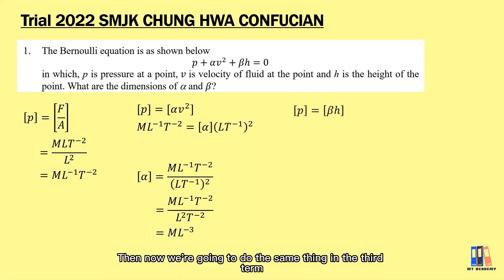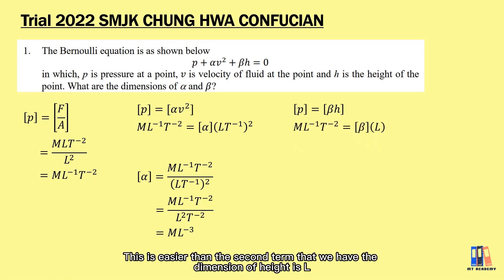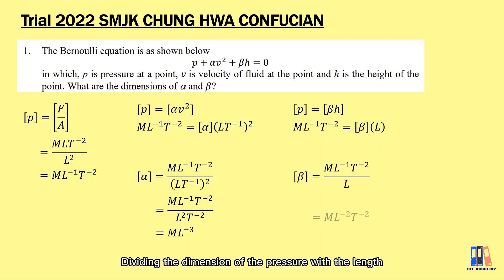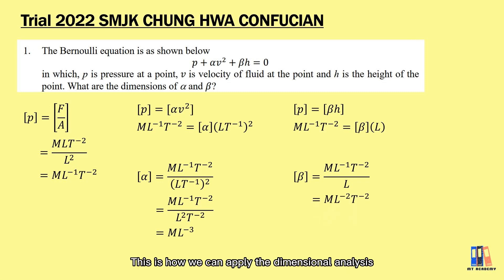Now we do the same for the third term, beta h. This is easier — the dimension of height is L. Dividing the dimension of pressure by the length, we have the dimension of beta as M per L squared per T squared. This is how we apply dimensional analysis to obtain the dimension of unknown variables.